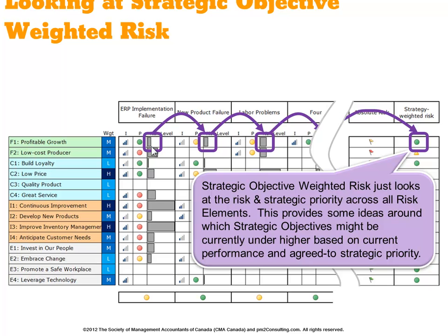This becomes important because it provides leadership with an idea of which parts of strategy are most exposed across all risks, based on current performance. This will vary over time based on performance, and as described, if you were to do scenario planning, you could apply different weightings on the left-hand side and the net risk picture will vary accordingly. This provides leadership with a better navigation and scenario planning tool to evaluate risks as they're occurring.